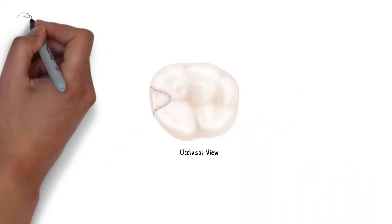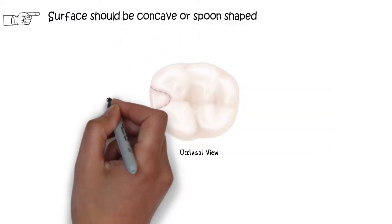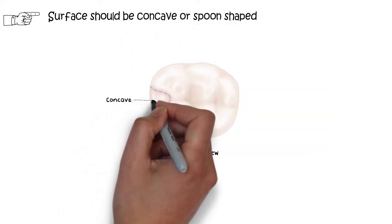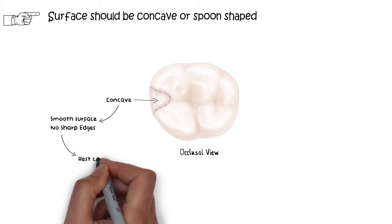The surface of the seat itself should be concave or spoon shaped, meaning it should be smoothened out evenly. No sharp angles or edges should be present in the occlusal surface of the rest seat, which will otherwise create a definitive hindrance to the metallic rest.